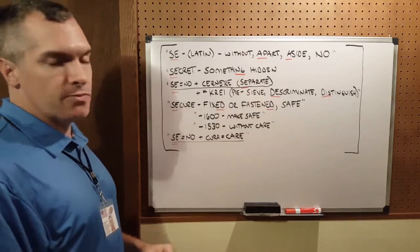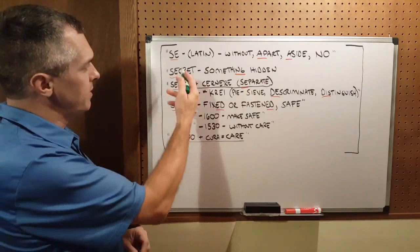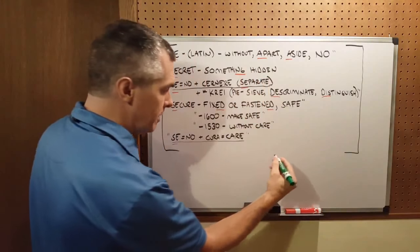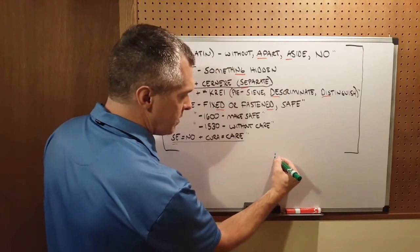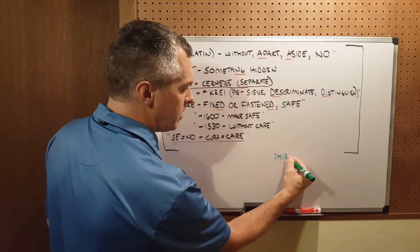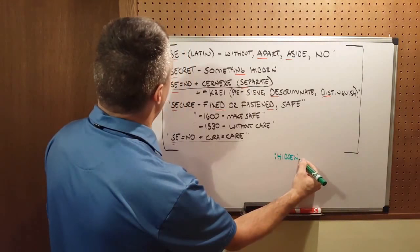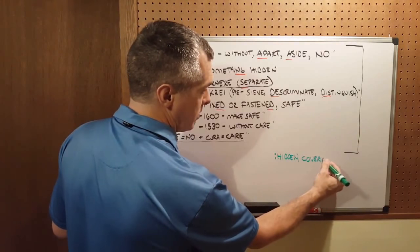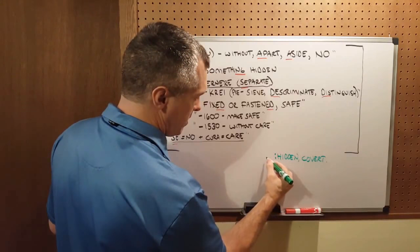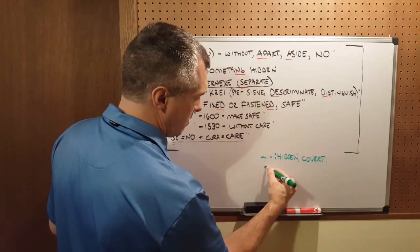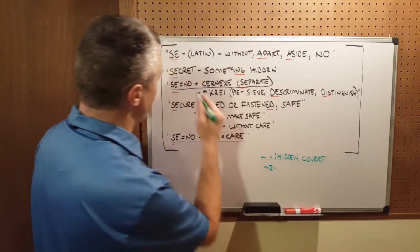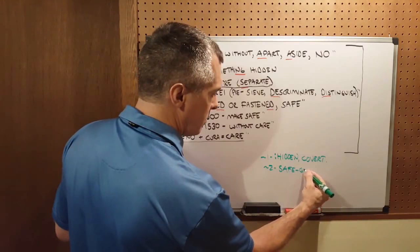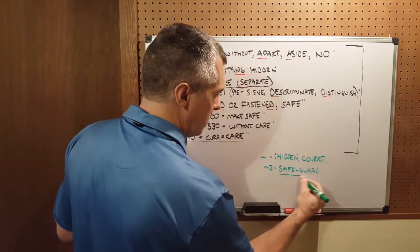So you may ask, what positive performance words can we use in a correct language construct to represent things like secret or secure? Google actually gives you the answers in their definitions. I would use safeguard.